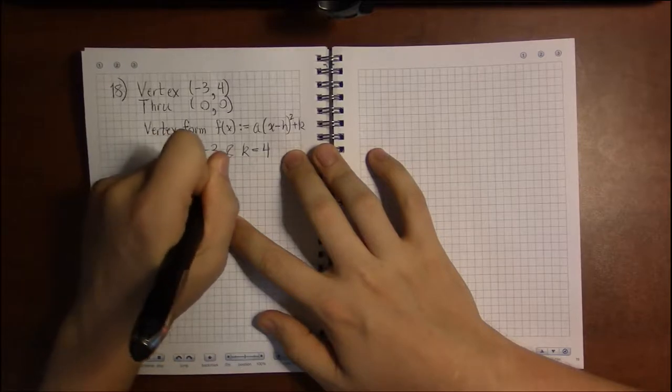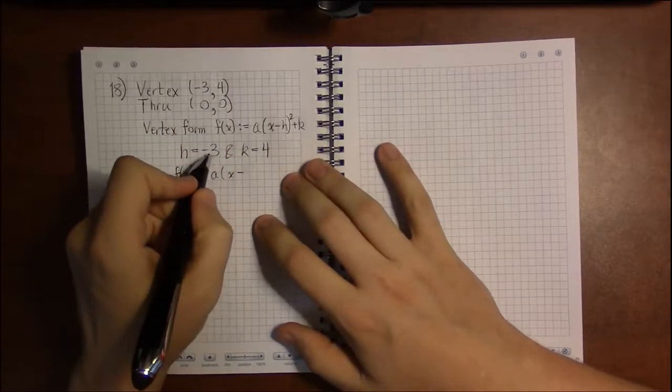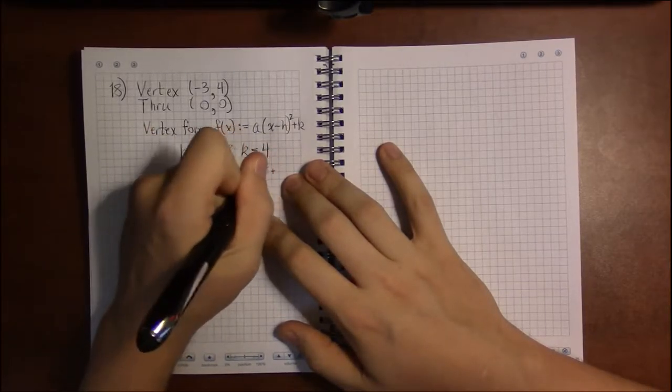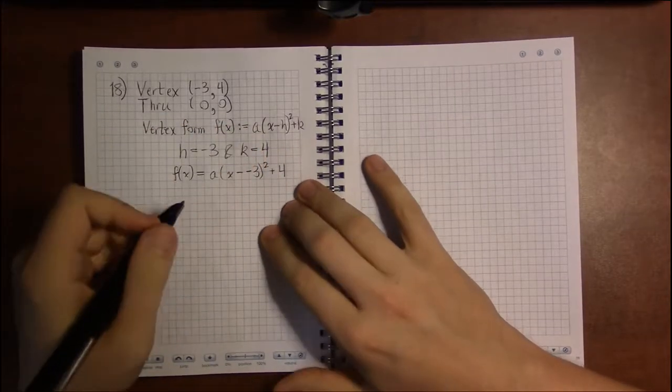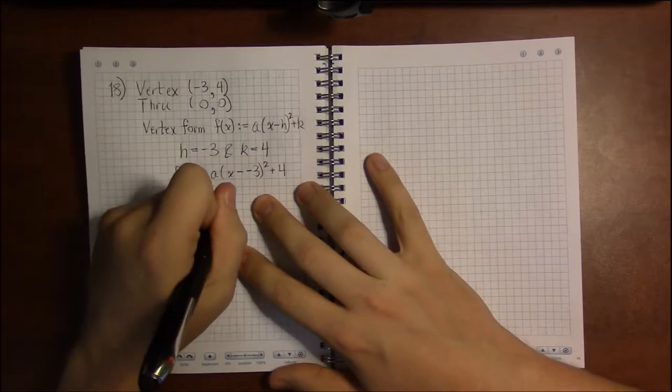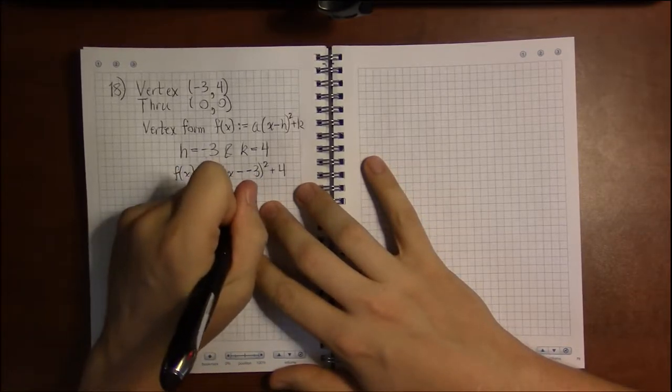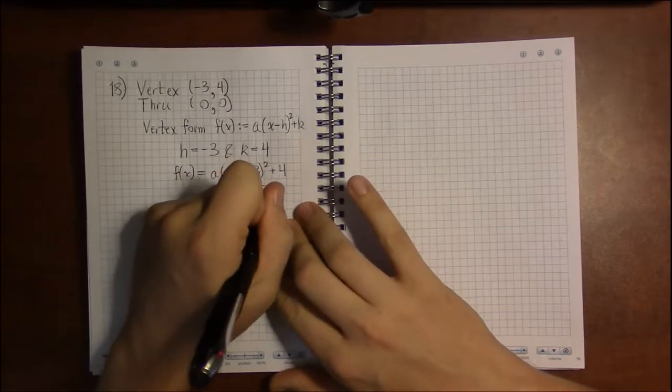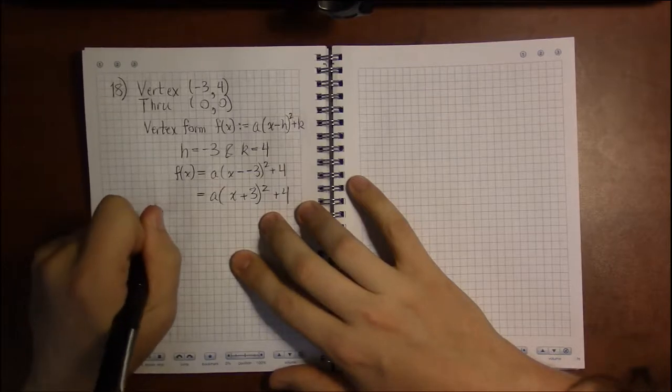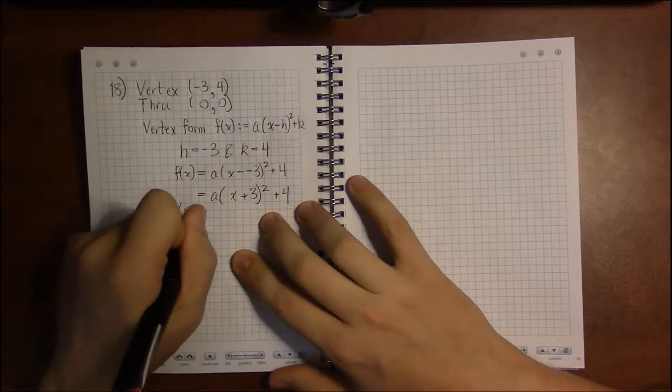But right now let's write down what we have so far. We have, we don't know what a is, x is supposed to remain a variable, h is -3 and k is 4. So we can simplify this a little bit because x minus a -3 is just a long way of saying x + 3. Now that we've simplified this a little bit, we'll use our extra point (0, 0)